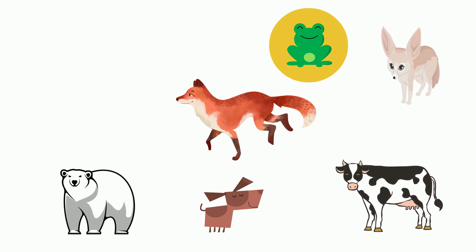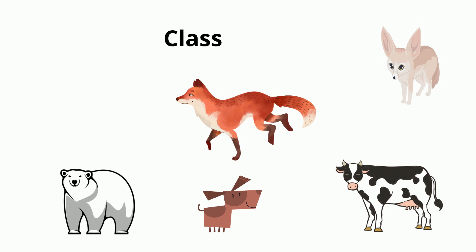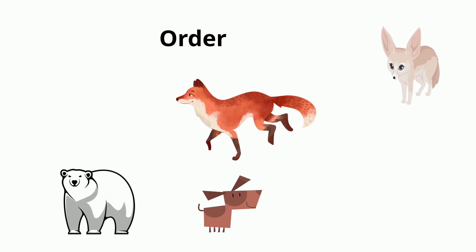Then comes class. Foxes are classified under Mammalia, meaning they have special glands that can be used to provide milk to the young, along with some other features. This eliminates the frog, because a frog is an amphibian and not a mammal. Foxes belong to the order Carnivora because they have specialized teeth that can be used to eat other vertebrates. This eliminates the cow, because they do not have these specialized teeth.